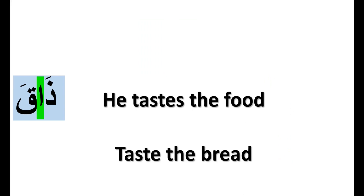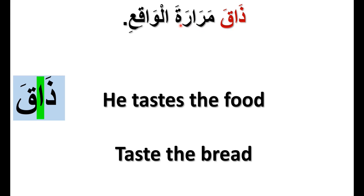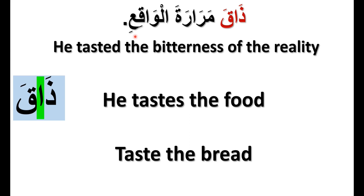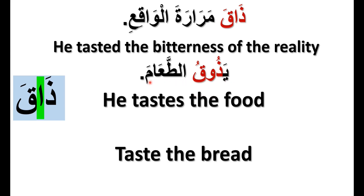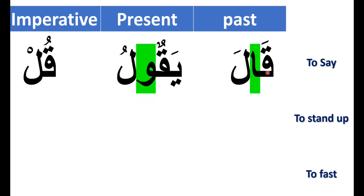This video is all about the weak verb with an Alif in its middle. I will give three sentences with a weak verb. ذاق مرارة الواقع — He tasted the bitterness of reality. يذوق الطعام — He tastes the food. ذوق الخبز — Taste the bread. I will give you ten examples of weak verbs that carry Alif in the middle.